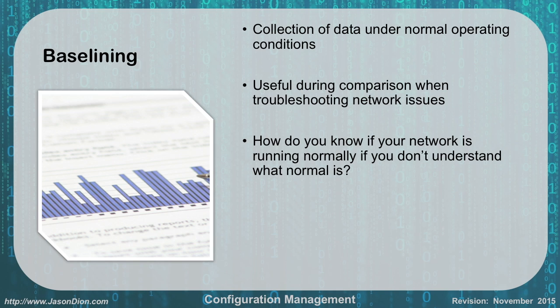Baselining is the collection of data under normal operating conditions. This is very useful for comparison when troubleshooting network issues. For example, how do you know if your network isn't running normally if you don't understand what normal is? If you know the network normally operates at 80–90% capacity, and you see a spike to 99%, you know something is wrong. Baselining is an important first step.